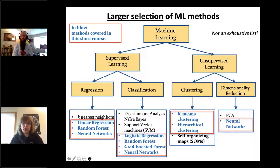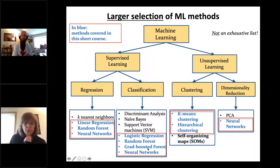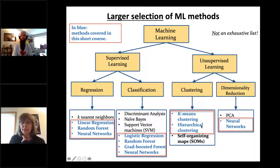Which ones will we cover in this class? Everything shown in blue with a red box: linear regression, random forest, and neural networks for regression; logistic regression, random forest, gradient boosted forest, and neural networks for classification; k-means and hierarchical clustering; and neural networks for dimensionality reduction.